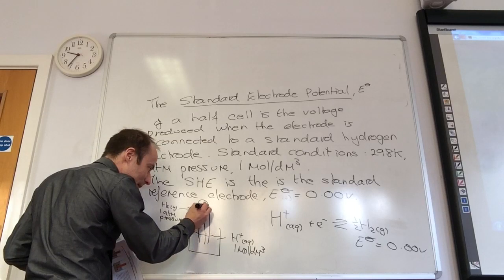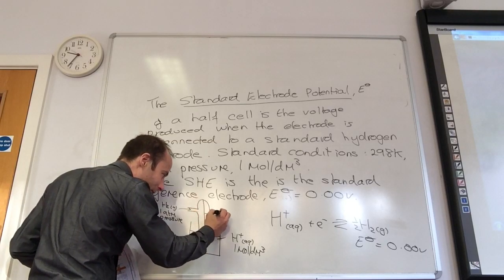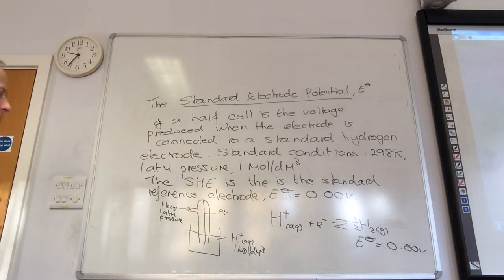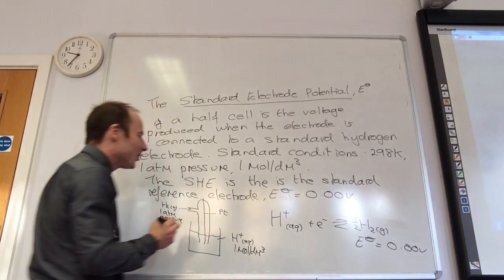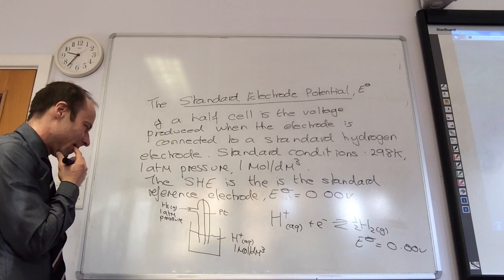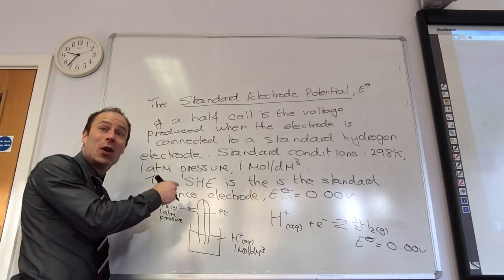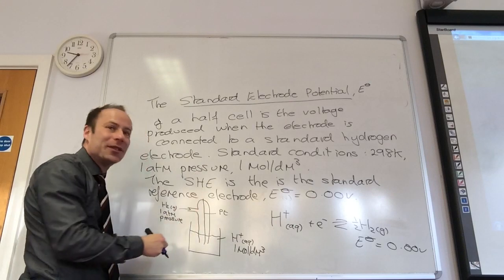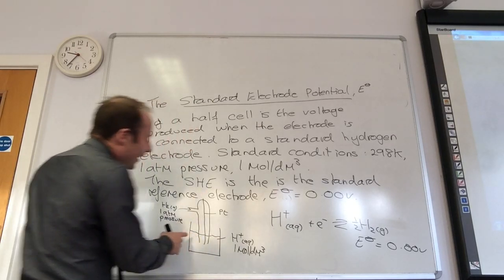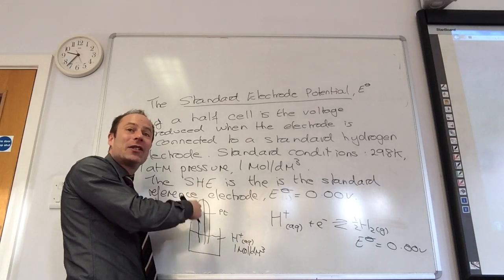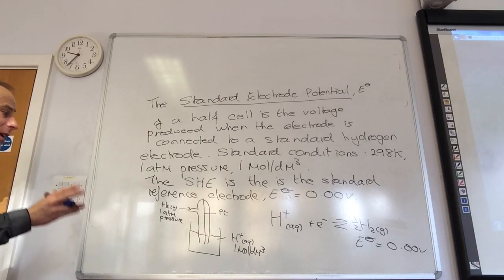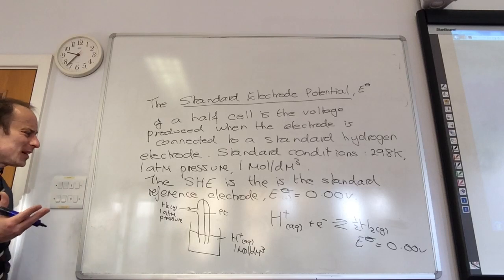I've got my little solution, H⁺ ions at one mole per decimeter cubed. What else do I need? I need my electrode, my bit of metal. What metal do you... I'm going to use platinum. Sometimes I'm not ignoring you, I just don't hear you, I promise. It's just a piece of wire.